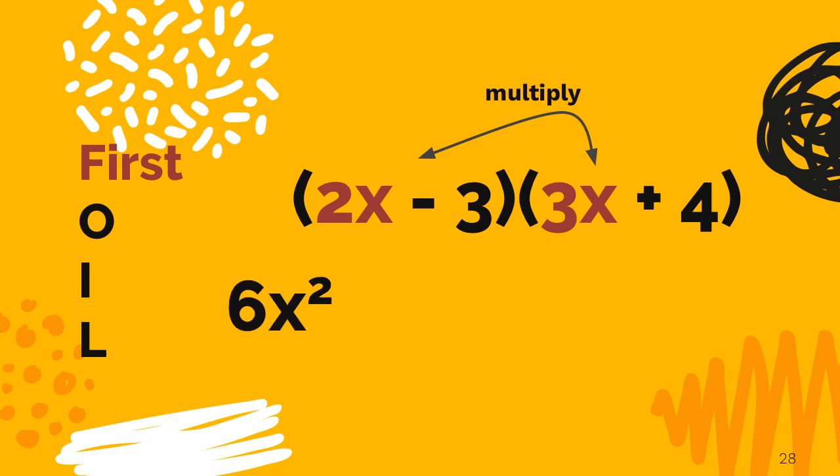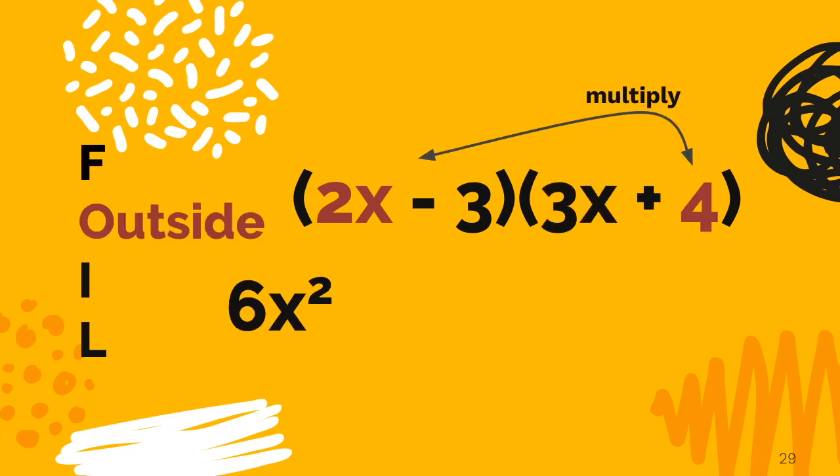Let's move on to the outside. We need to take 2x and multiply it by positive 4. And of course, that is 8x.